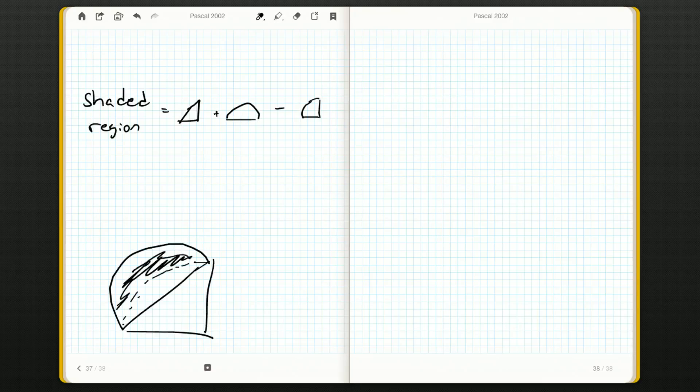That gives us exactly the shaded area we want. So that was one-half plus one-quarter pi minus one-quarter pi, and that's just going to be one-half.